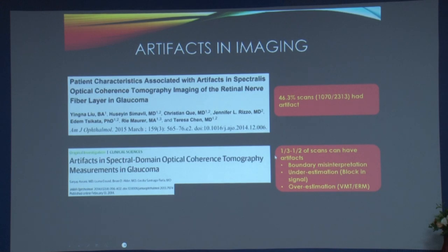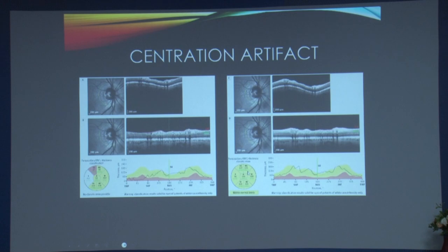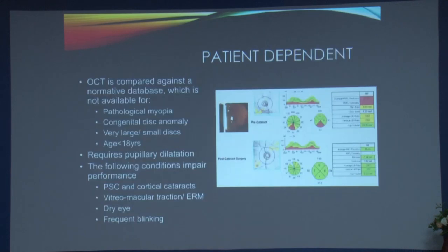Clinical example of artifact: a 45-year-old open angle glaucoma patient whose scan was not centered — the top was chopped off — giving a falsely red result. When repeated correctly, it came back normal. Lesson: anything red on OCT should not automatically be considered glaucoma — identify the cause. OCT is compared against a normative database that does not exist for pathological myopia, congenital disc abnormalities, very large or very small discs, pediatric patients under 18, and patients who require pupillary dilation.